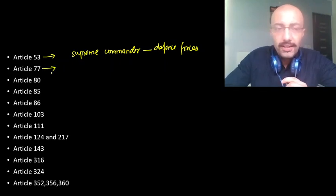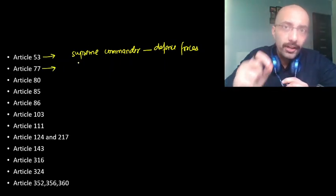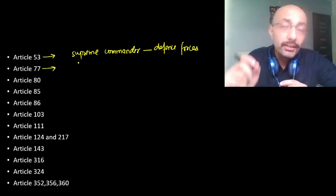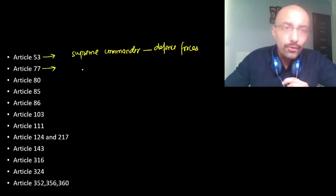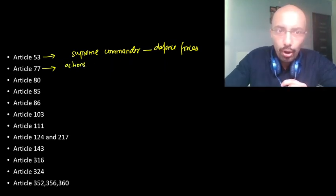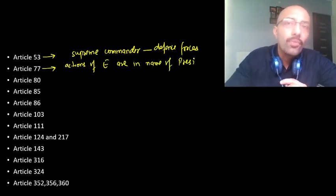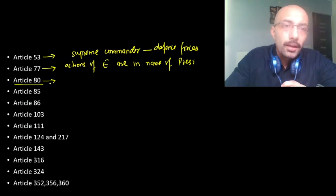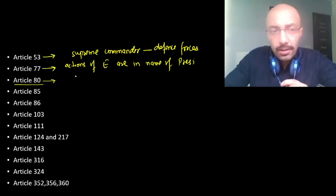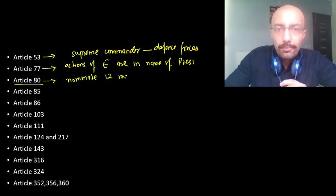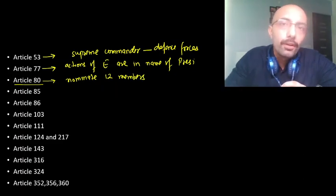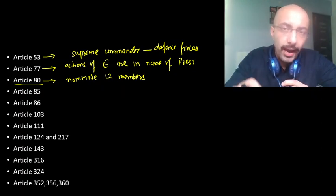The second article is Article 77, which says that the business of the Government of India shall be conducted in the name of the President — meaning all executive actions are in the President's name. The next article with scope for discretionary powers is Article 80, which gives him the power to nominate 12 members to Rajya Sabha from the fields of literature, arts, science, and social service.